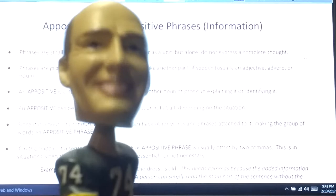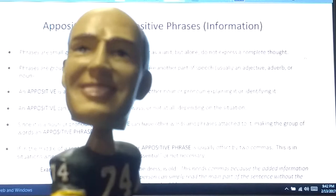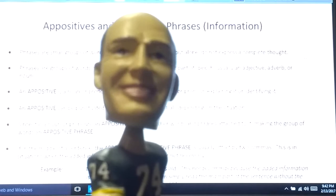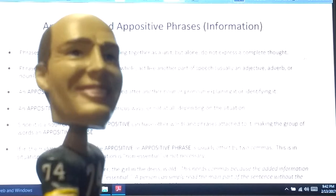These appositive phrases usually show up in the middle — maybe the end, but usually the middle — of a sentence, and they're offset by commas, which means a comma will go just before it and sometimes after it, unless it is ending the sentence. So let's take a look. I want you to read all this information on appositive phrases and the examples shown, and then we're going to start the exercise.